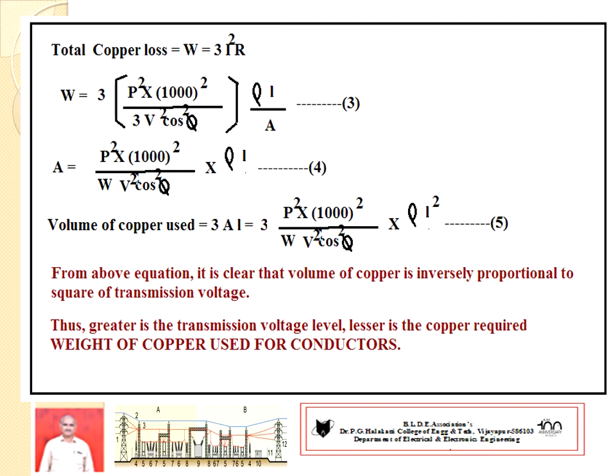The volume of copper used equals three times the cross-sectional area multiplied by the length of the line. Develop equation 5 using the known values of A and L. From equation 5 it is clear that the volume of copper required for a transmission line is inversely proportional to the square of the voltage of the system.